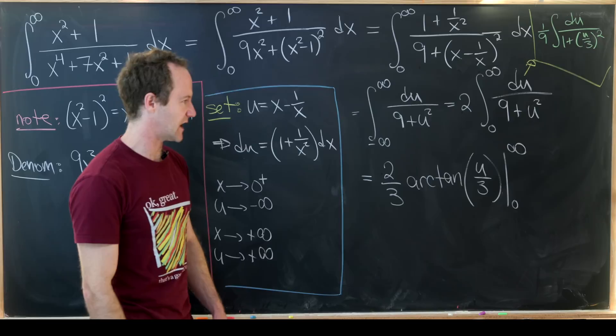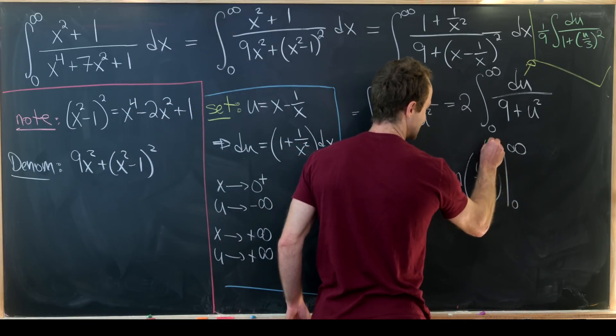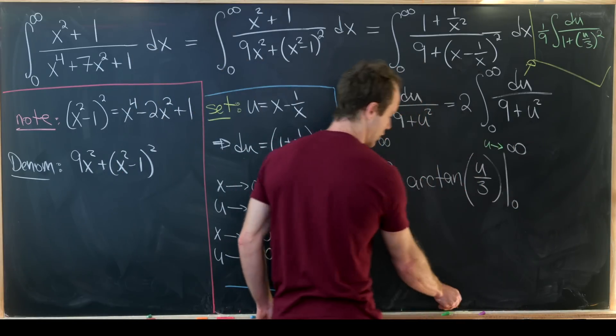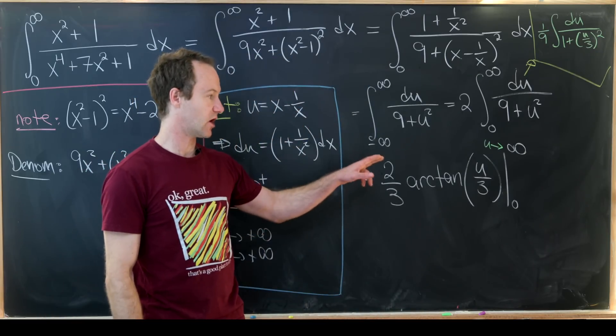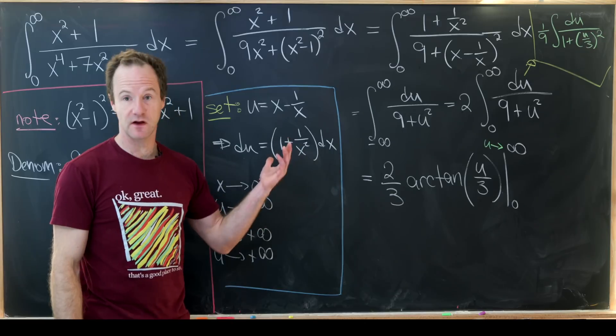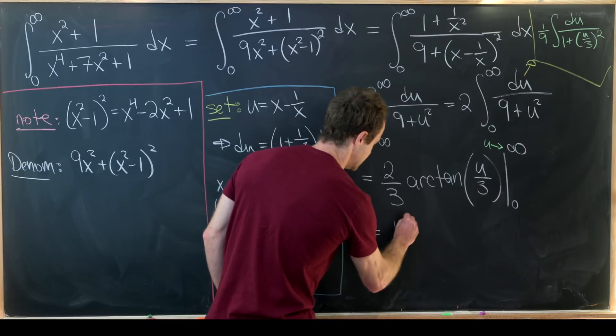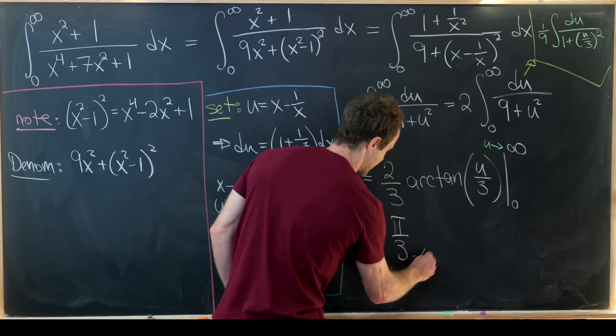Okay, so now let's do our evaluation. This upper bound evaluation is a limit as u approaches infinity. The arctangent of infinity is pi over 2, and the arctangent of 0 is 0, so we get 2 thirds times pi over 2. In other words, we have pi over 3.